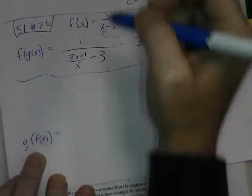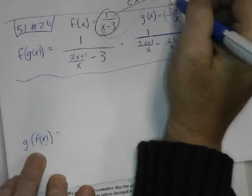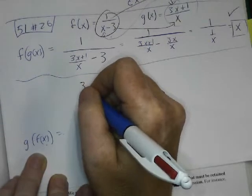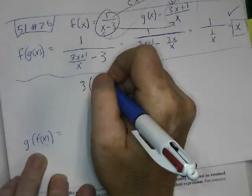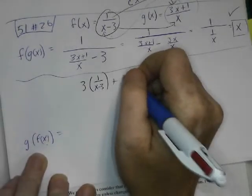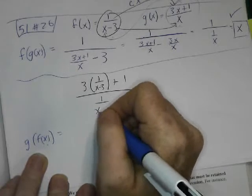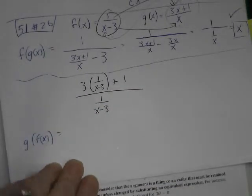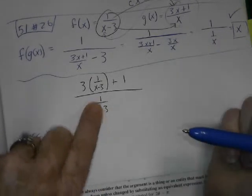Plugging f of x into g of x, that means I have to plug this thing in two places, there and down there. So it's going to look like this. 3 times this ugly thing, 1 over x minus 3, plus 1 all over this ugly thing. Is it okay? See, that's that bottom x right there.